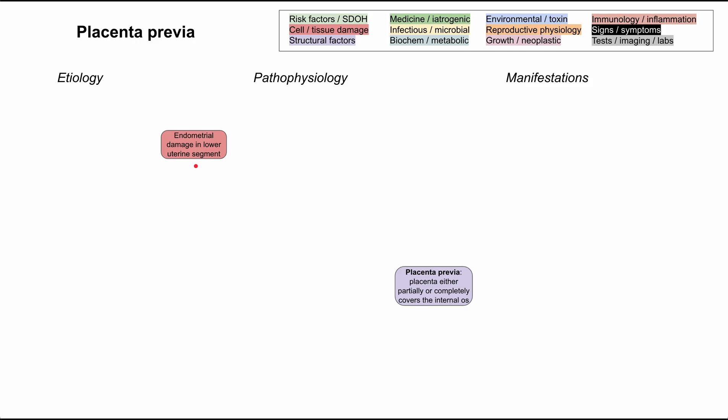The endometrial damage usually causes some kind of scar tissue. If you have a break in the endometrium, the body is going to attempt to repair that. You'll have an inflammatory pathway, cytokines that come and repair the endometrium and cause uterine scarring. That uterine scarring creates an environment that has high oxygen and high collagen, and it turns out that the zygote — the fertilized egg — tends to want to implant in a rich environment that has oxygen and collagen.